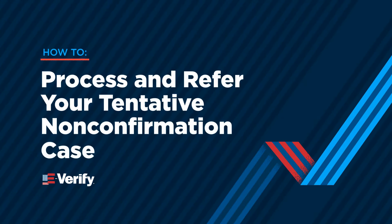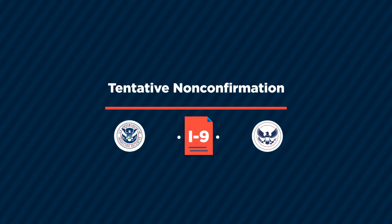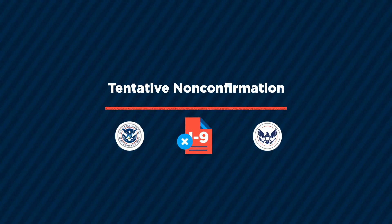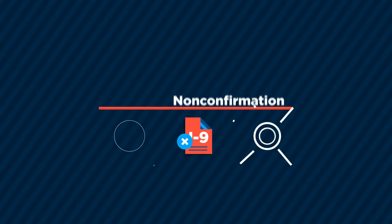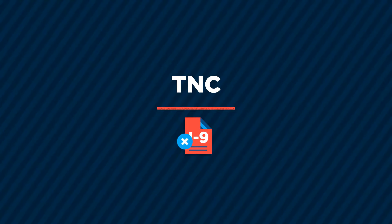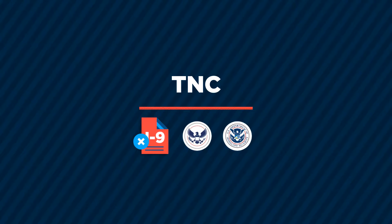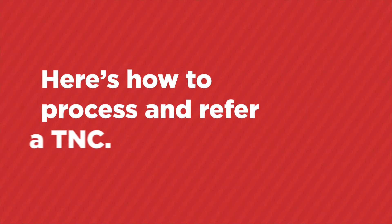Ready to process and refer your TNC case? When an employee's Form I-9 information is different from records available to federal and state governments, it's called a tentative non-confirmation, otherwise known as a TNC. When this happens, E-Verify needs additional information before it can confirm employment authorization. Here's how to process and refer a TNC.